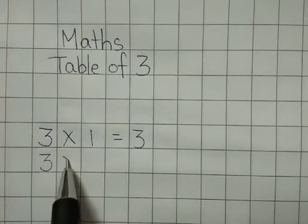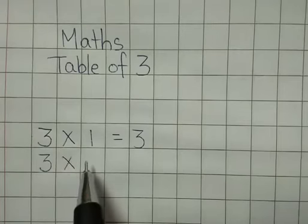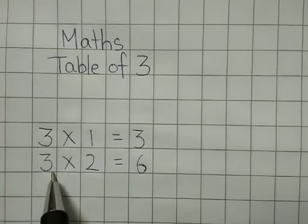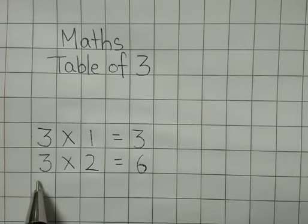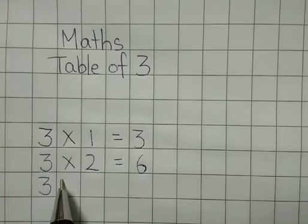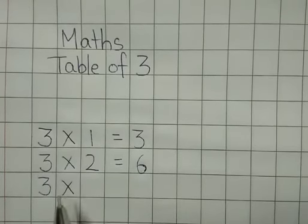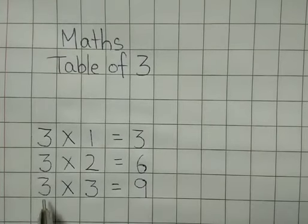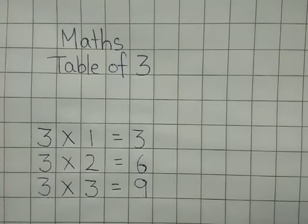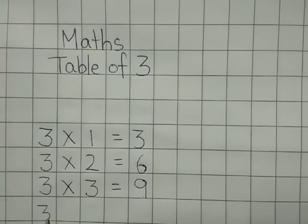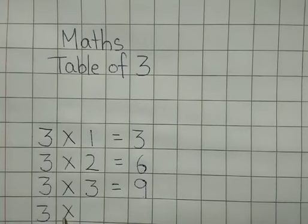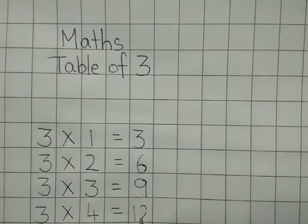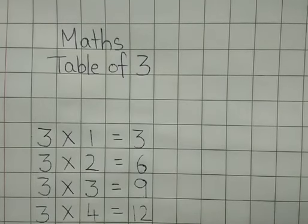Next, three — again the multiplication sign — two is equal to six. Three twos are six. Three — multiplication sign — three is equal to nine. Three threes are nine. Three — again this sign — four is equal to twelve. Three fours are twelve.